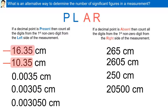For 0.0035: a decimal point is present, so we come from the left. The first non-zero digit is 3 — 2 significant figures. For 0.00305: a decimal point is present, so we come from the left. The first non-zero digit is 3, therefore everything is significant — 3 significant figures.